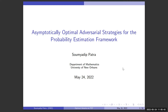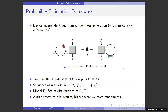Good morning everyone. My name is Somya Deep and today I'm going to talk about asymptotically optimal adversarial strategies for the Probability Estimation Framework. The Probability Estimation Framework was developed by Mannequin, Yanbao, Jang, and Peter — Peter was working at Nest at the time. This framework is associated with device-independent quantum randomness generation, which exploits the fact that there are quantum correlations of measurement outcomes that cannot be accounted for by any deterministic side entity having some side information.